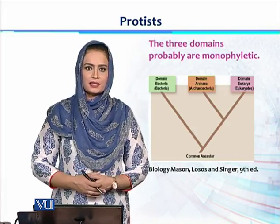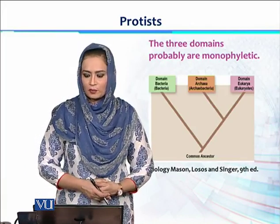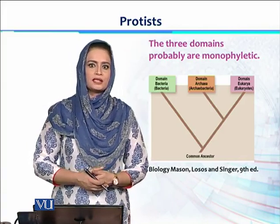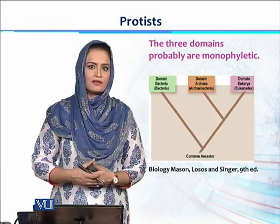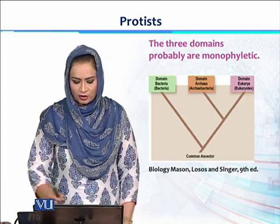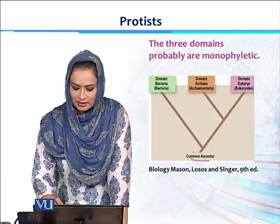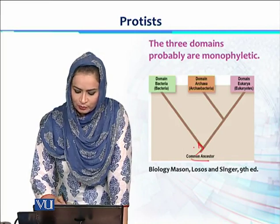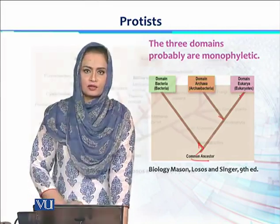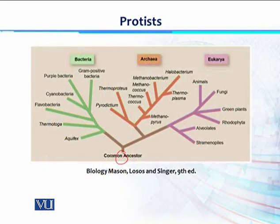Still, there is a concept presented by taxonomists and cladists that these three domains are probably monophyletic, meaning it is possible that all organisms in these three domains evolved from a same common ancestor. As shown in the image, there could be a common ancestor from which a group evolved into domain Bacteria, then Archaea, and then Eukaryotes — giving three branches or three different groups.